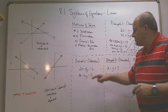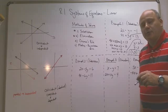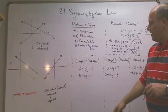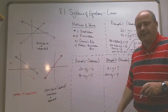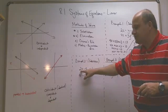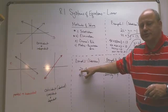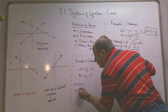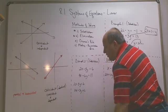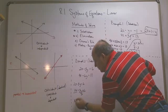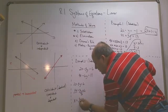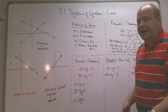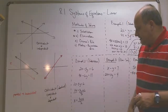Now let's look at example two, also solved by substitution. I'm going to solve for x from the first equation: 2x minus 3y equals 6. Adding 3y to the other side and dividing by 2, I get x equals (3y plus 6) divided by 2. The elimination method would have been easier here, but I chose substitution.